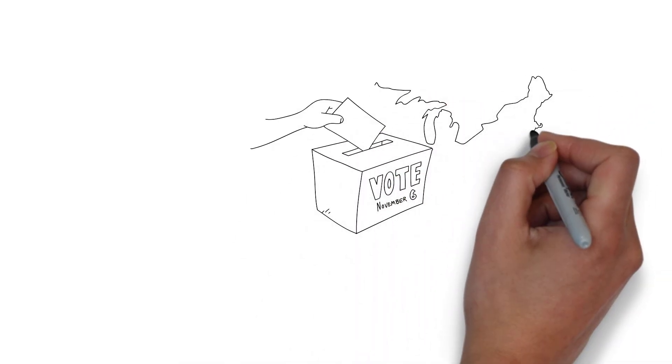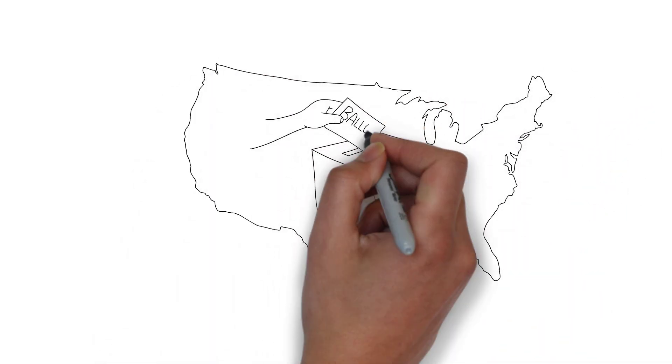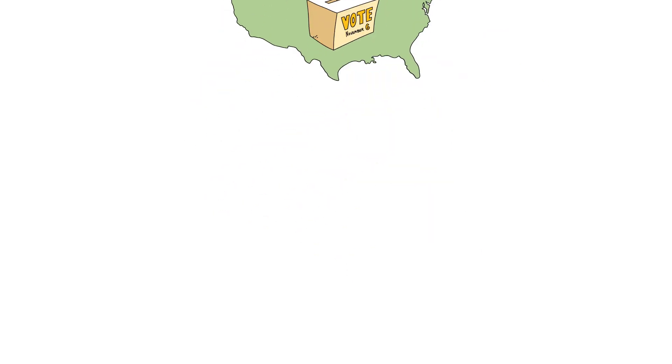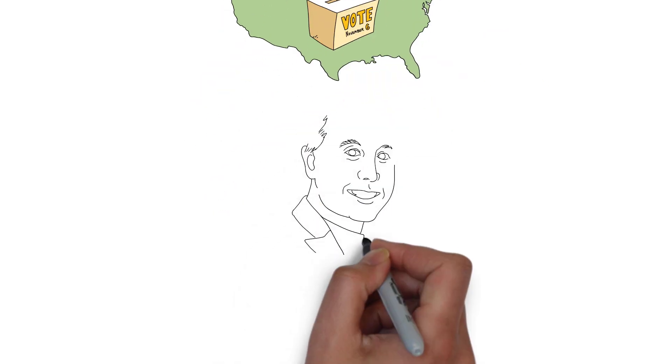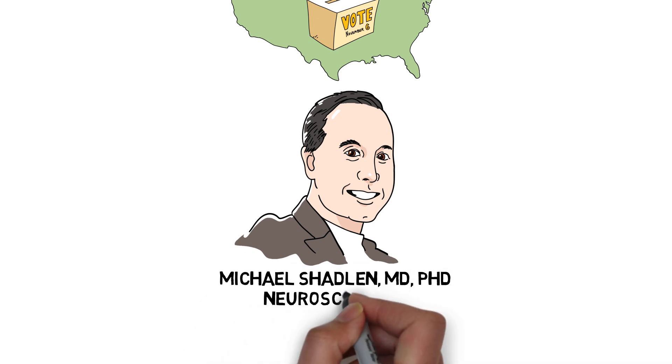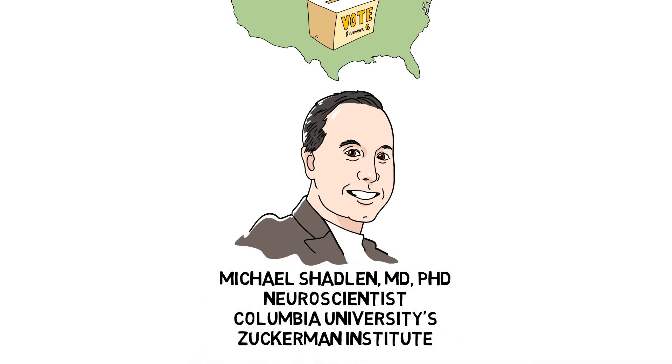It's election time again, time for everyone in this country to cast their ballots and decide who will represent them. And decisions are what Michael Shadlen, a neuroscientist at Columbia's Zuckerman Institute, studies.